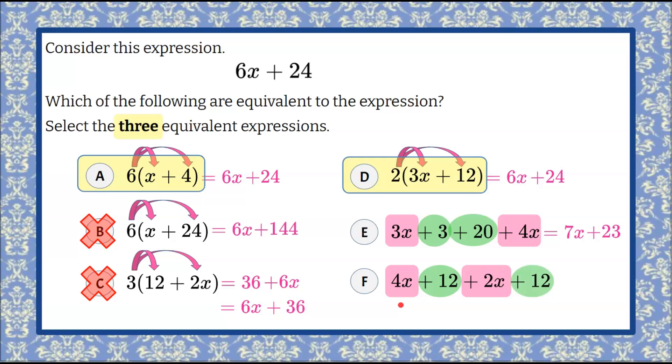Let's look at answer choice F. 4x and 2x are like terms. So we're going to combine those to get 6x. 12 plus 12 is 24. 6x plus 24 is equivalent. So we know that our answer choices that are equivalent expressions are A, D, and F.